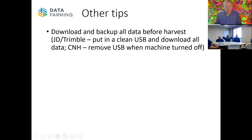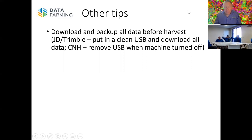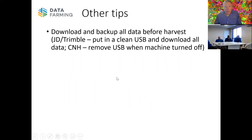Some other tips: if you've got a card full on the machine, a lot of growers will start harvesting, see the card's full, hit delete, and they've just lost all their previous year's yield data. It's a good idea to download and back up all that data before harvest. On John Deere and Trimble machines, you put in a clean USB and hit 'send all data to USB' and it will push it all. On CNH machines the USB stays in the machine all the time, so you need to turn the machine off, pull the USB out, and go and download the data.